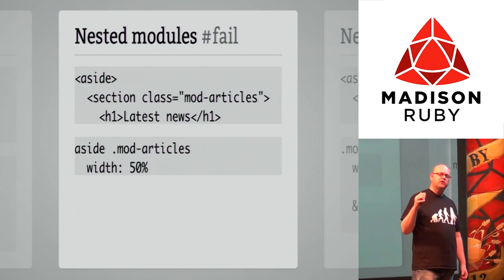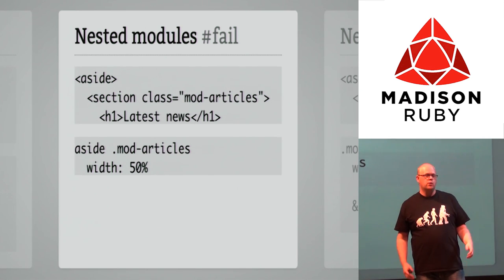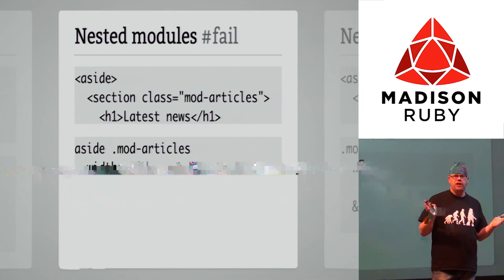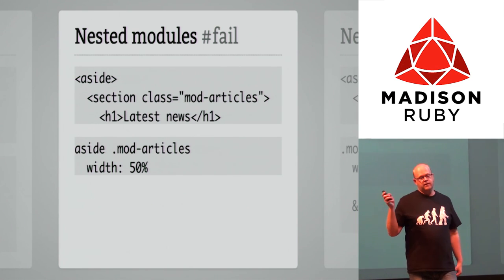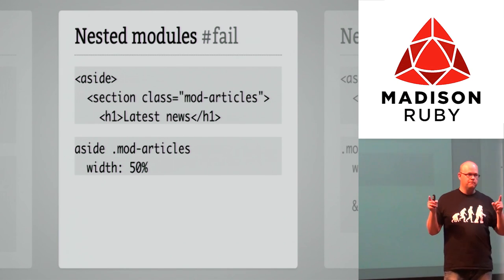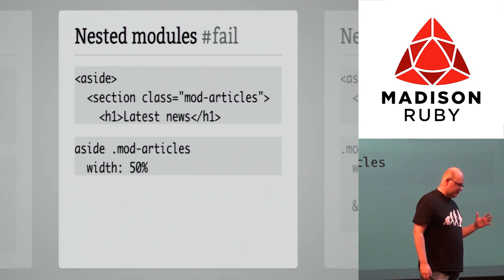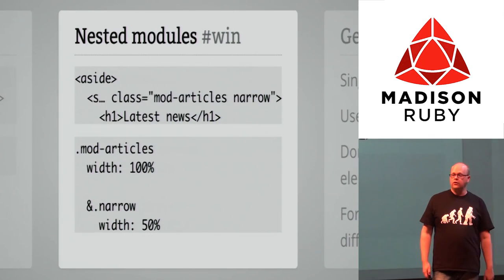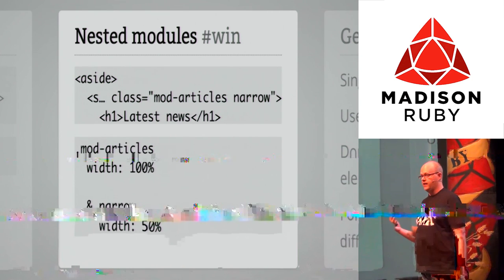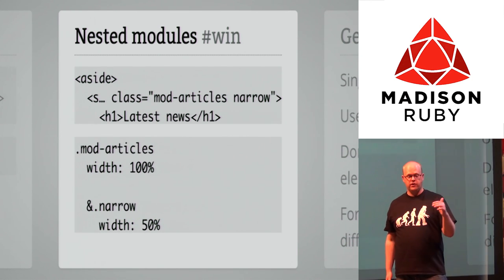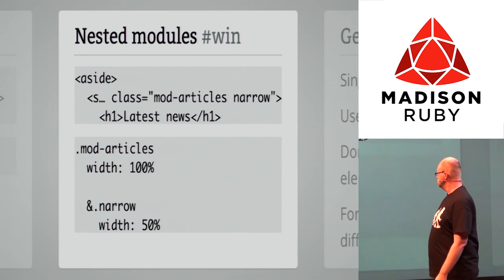Sometimes you want to nest modules — you have a module used elsewhere that needs to look slightly different. In an aside with those articles, you want the section to be more narrow at 50% width. If you make the selector longer, it causes headaches. What I like to do is add a second class name — the first describes the module name and the second describes the exception. So you use mod-articles in combination with a width of 50%. I like this approach.